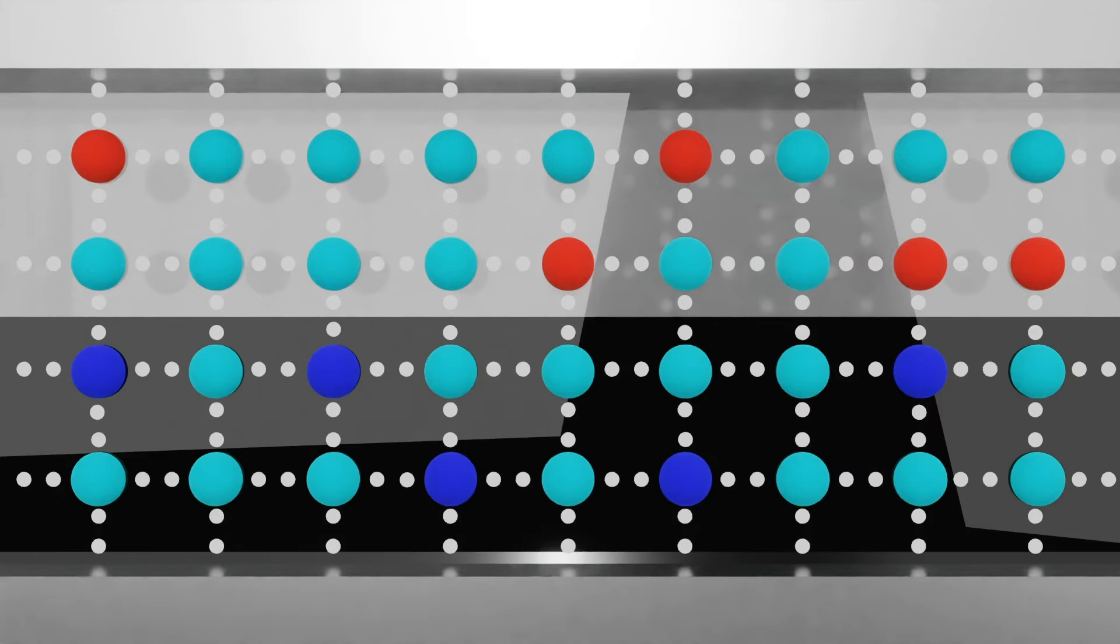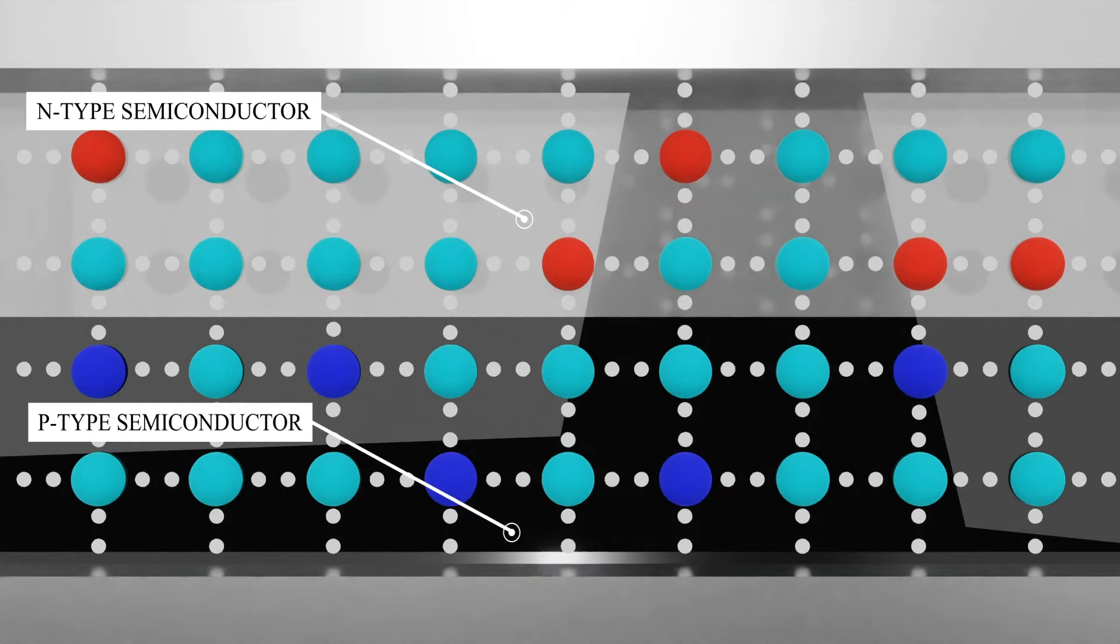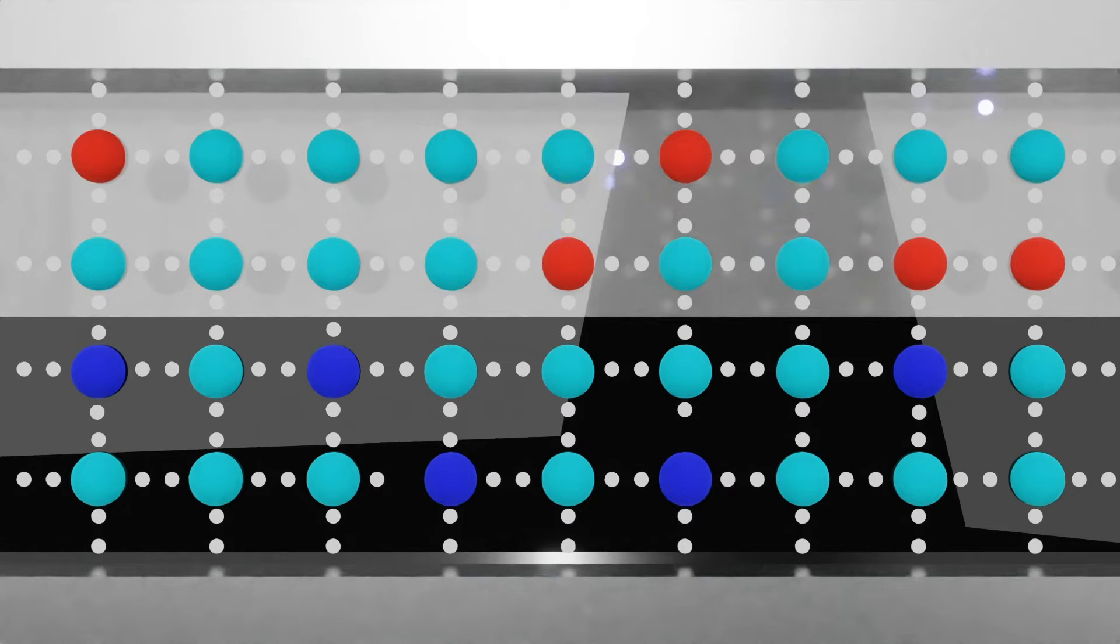A silicon solar cell uses two different layers of silicon: an n-type semiconductor and a p-type semiconductor, which are designed to absorb photons from sunlight. The n-type silicon is negatively charged because it has extra electrons, and p-type silicon is positively charged because it has fewer electrons and more extra spaces for electrons, called holes.